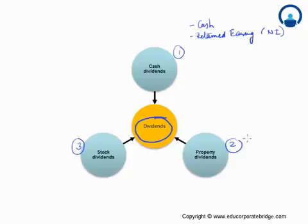Property dividend is a dividend which is actually paid in the form of some kind of assets. Instead of paying hard cash, you are actually paying some assets. These assets could be something like marketable securities. So instead of cash, you are giving some marketable securities to your owners.